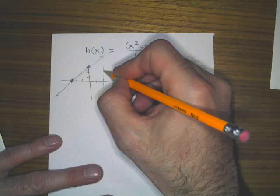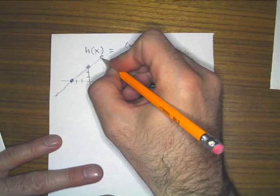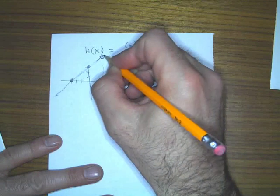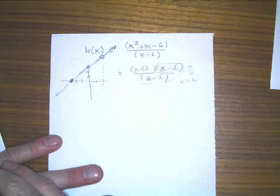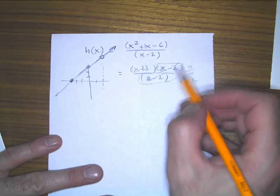So what happens is, you don't have an asymptote. You end up with a hole, which is also known as a removable discontinuity. So that's the trick.